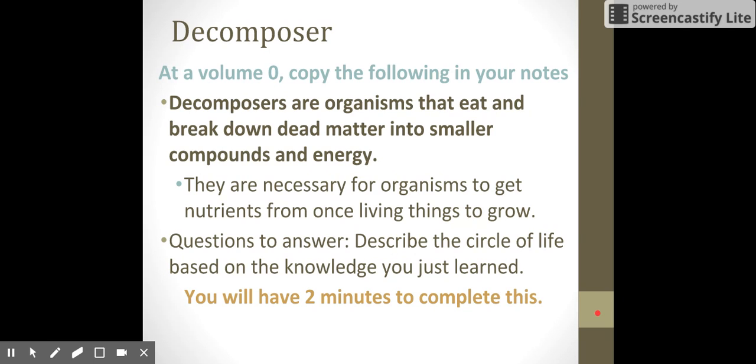And then the nutrients that are produced there allow for producers to go ahead and grow on top of them. So my question here is, describe the circle of life based on what we just learned. Again, I've been quoting Lion King. I've been saying Lion King in class for the past couple of days. Circle of life. How are decomposers attached to that circle of life, knowing that we have producers and then now consumers as well?